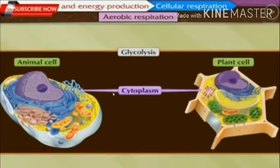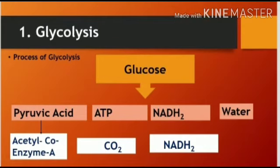That is glycolysis. The glycolysis process occurs mainly in the cytoplasm of plant cells as well as animal cells. A molecule of glucose is oxidized step by step in this process, and there is a formation of different molecules. The formula of glucose is C6H12O6. After oxidation, glucose is converted into pyruvic acid, ATP, NADH2, and water.